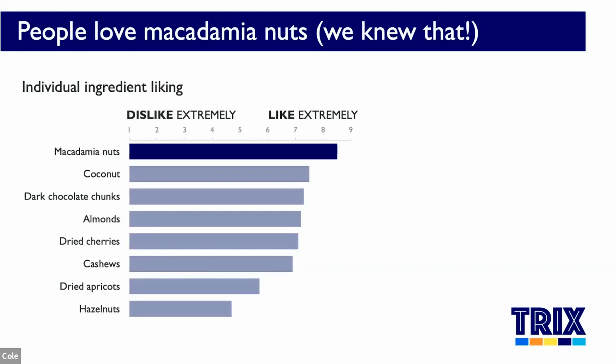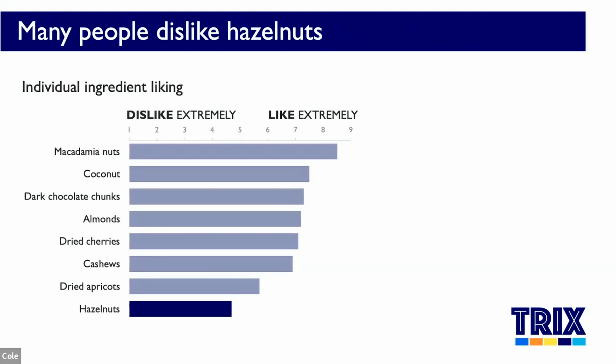I'll direct your attention first to the top — those macadamia nuts. There is magic in them. We knew that. They're a key ingredient in the current trail mix. On the other end of the spectrum, however, people really dislike hazelnuts. And actually, that middle-of-the-road average is misleading. It turns out hazelnuts are polarizing — people either really like or strongly dislike them. This was driving the issues we were seeing with Alternative B of the trail mix recipes.